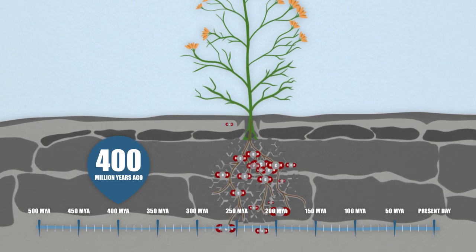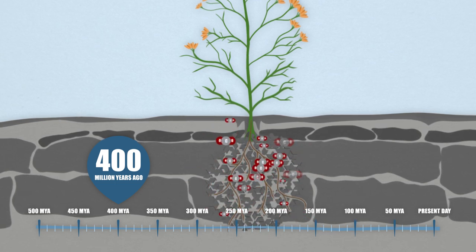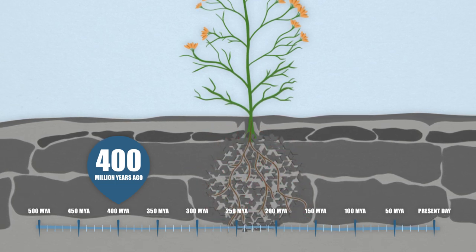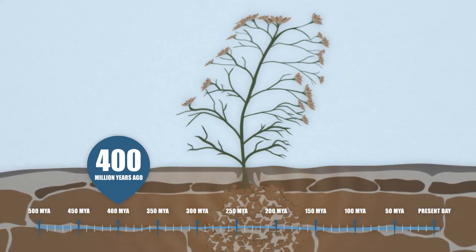The roots also use carbon dioxide to produce acid that breaks down the rock even further. Finally as plants die and decay they add nutrients making the soil much richer.